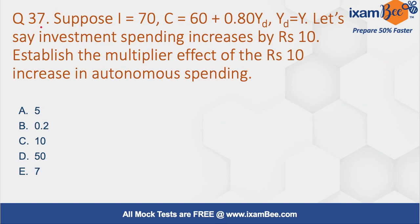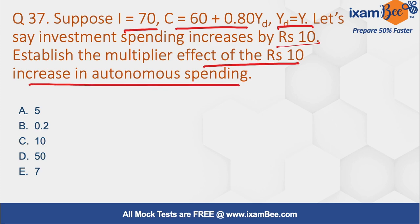Question number 37. Suppose I equals 70 and C equals 60 plus 0.8 Y_D, where Y_D equals Y. Investment spending increases by rupees 10. We have to establish the multiplier effect of a 10-rupee increase in autonomous spending.